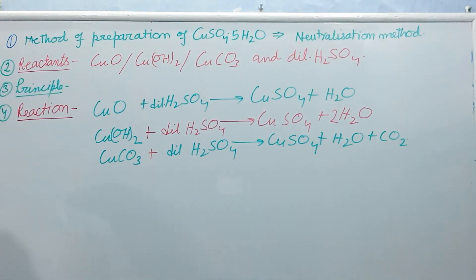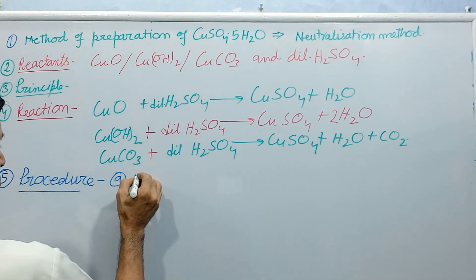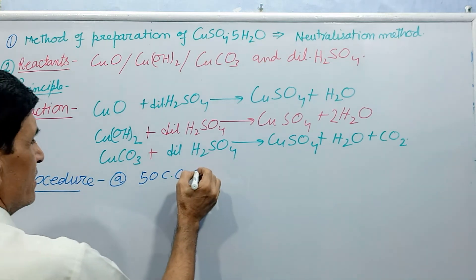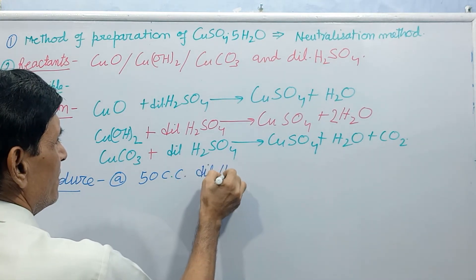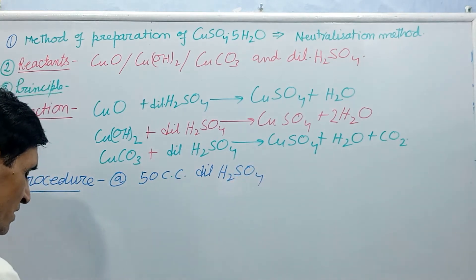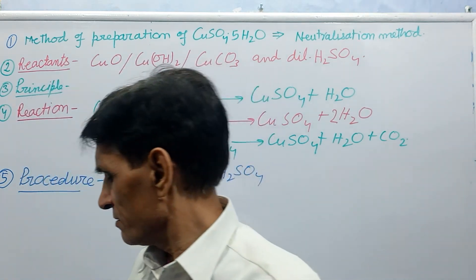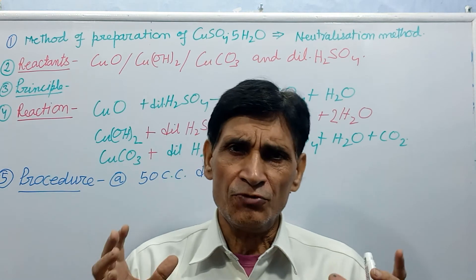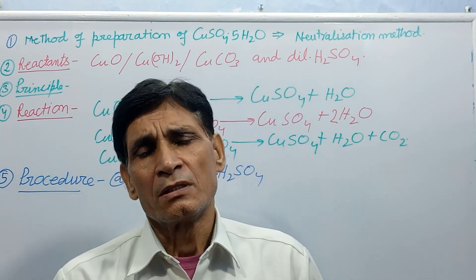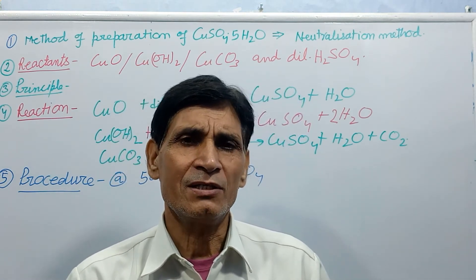Now, let us see procedure or process. Procedure number 5. First point, number A. Take about 50 cc dilute sulphuric acid in a clean beaker and warm it on wire gauze.